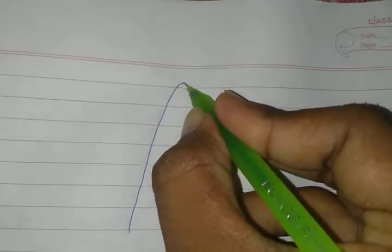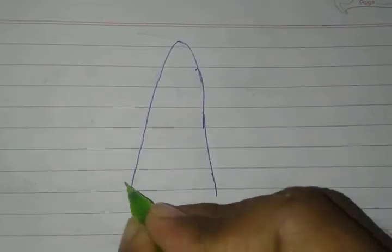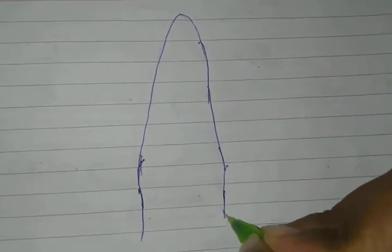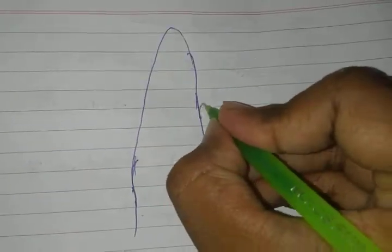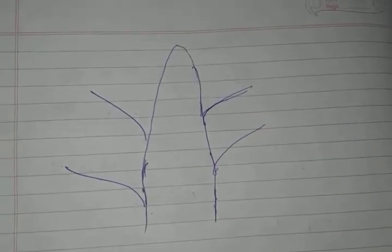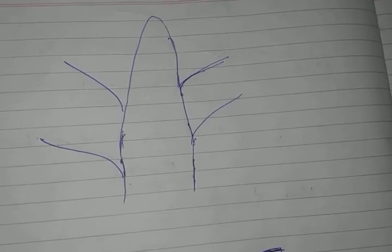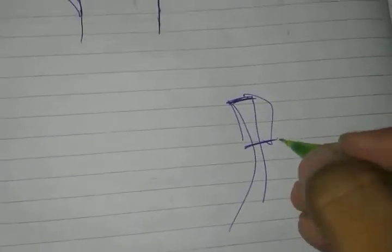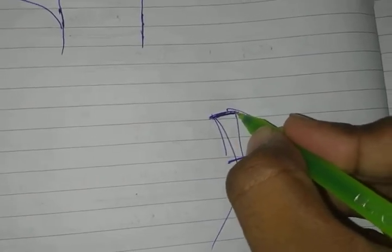Depending upon the location of meristematic tissue, there are three kinds. Where is meristematic tissue present? Suppose this is a stem. Stem's apex - this top part. This part we call apex. Let me show you this upper part of stem. This is called apex.